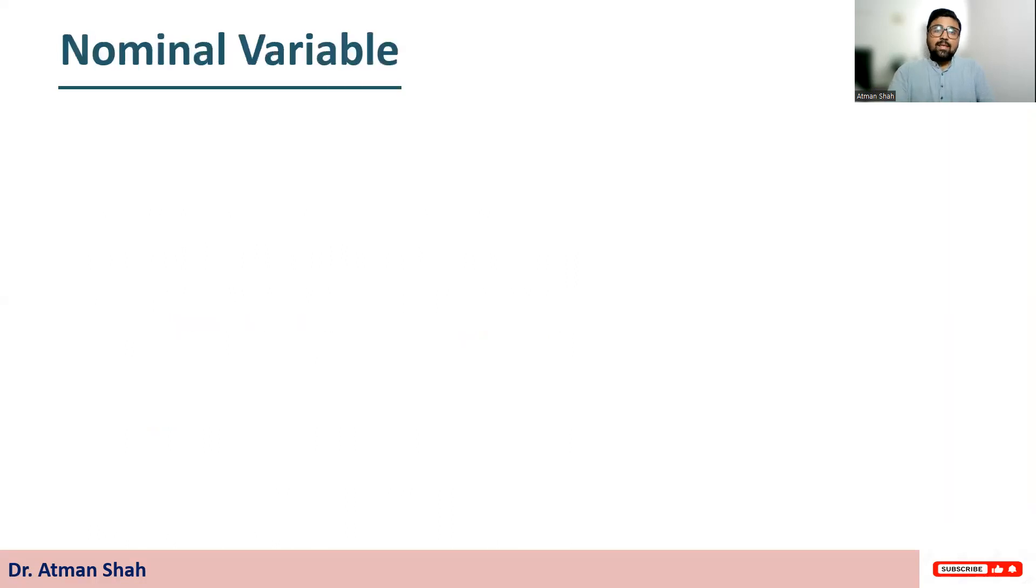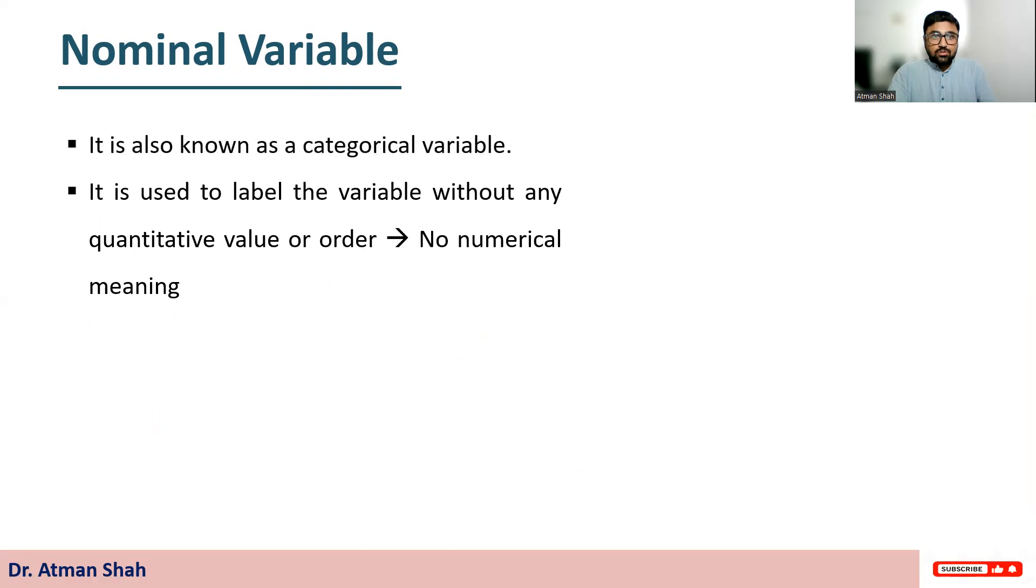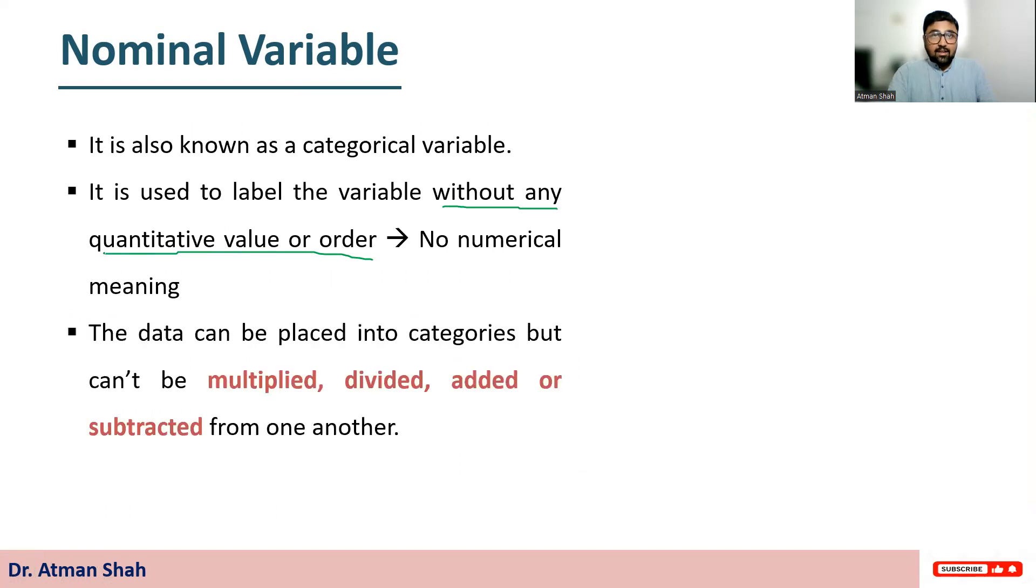So let's begin with the nominal variable. A nominal variable is also known as categorical variable. And it is used to label the variables without any quantitative value or order. This is very important—without any quantitative value or order. So there is no numerical meaning. And therefore the data can be placed into categories, but can't be multiplied, divided, added or subtracted from one another.